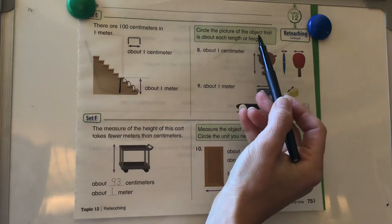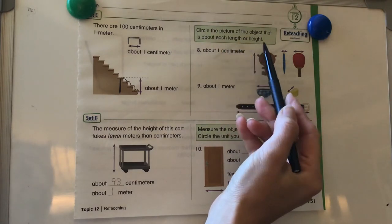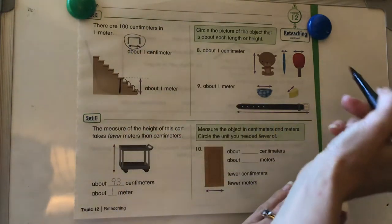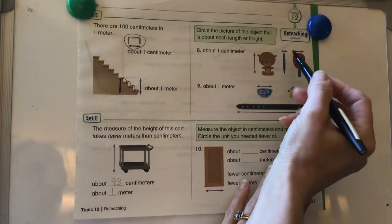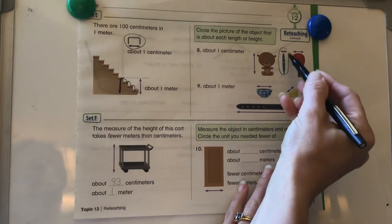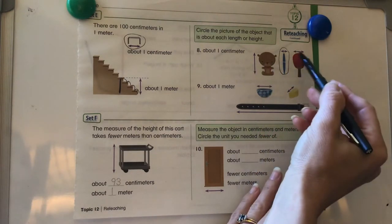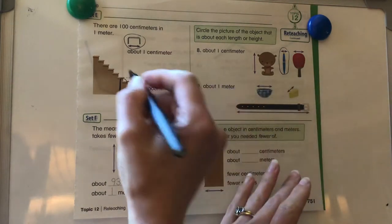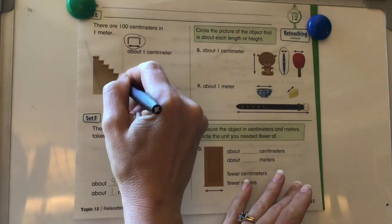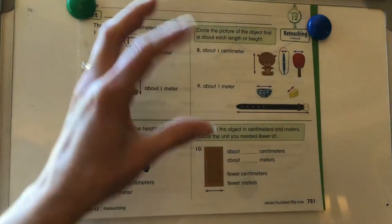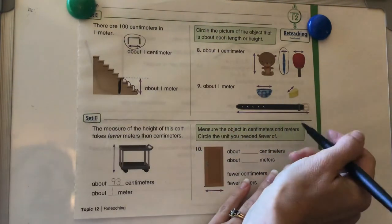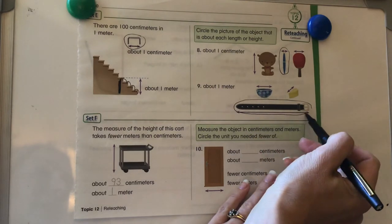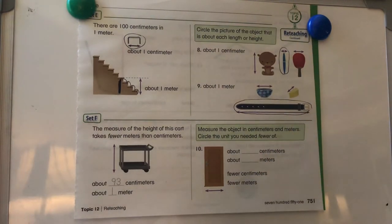Circle the picture of the object that is about each length or height. So one centimeter. We're looking at things that are about this big. So things that are one centimeter wide is a pencil, but a teddy bear is going to be more than one centimeter and the top of a ping-pong paddle is going to be more than one centimeter. And then things that are about one meter, so about as tall as four steps or about as tall from the floor to a handle on a doorknob. And that would be about a belt. It would be about a meter.